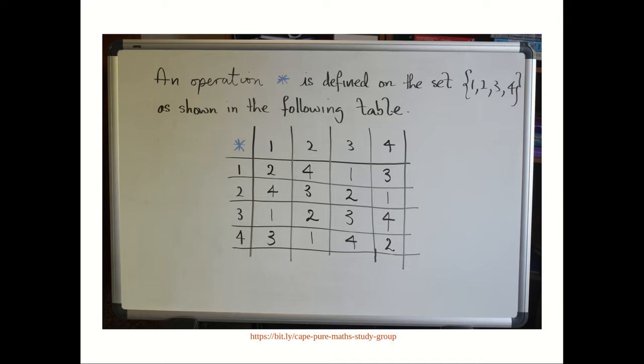In the first part, we need to prove that star is commutative, and in the second part, we need to show that 3 is the identity element for star. Okay, so let's tackle the first part.